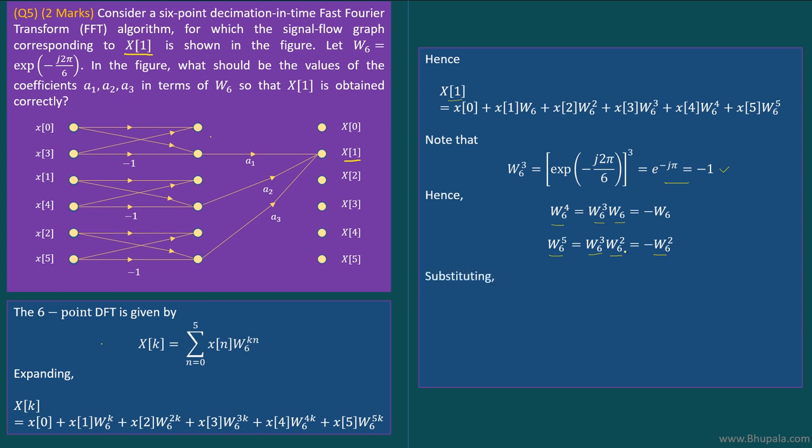By substituting these three values in this equation, we get X(1). Note that we have replaced W6^3 with -1, and hence we will get X(0) - X(3). Similarly, W6^4 we replace with -W6, and hence we get W6 times (X(1) - X(4)). Similarly, the last term would be W6^2 into (X(2) - X(5)).